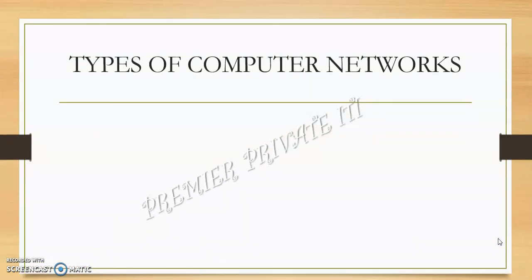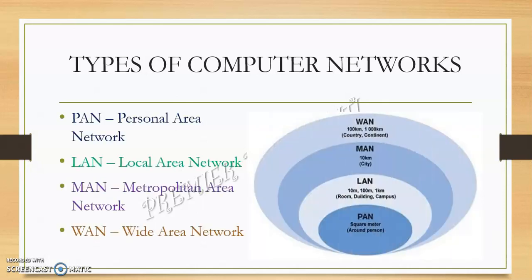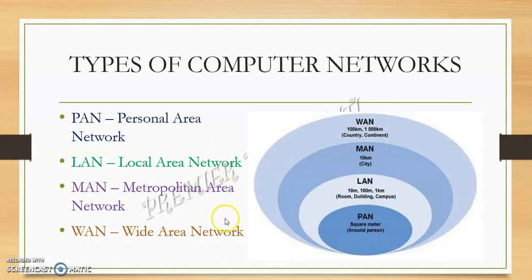Types of Computer Networks. There are different computer networks available depending on the area they cover. We classify networks based on their size. These types are: PAN — Personal Area Network, LAN — Local Area Network, MAN — Metropolitan Area Network, and WAN — Wide Area Network.